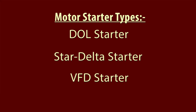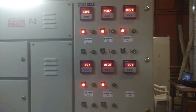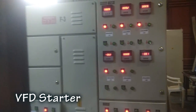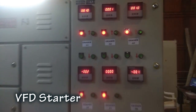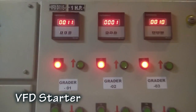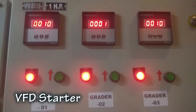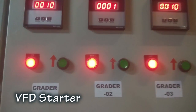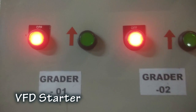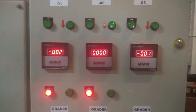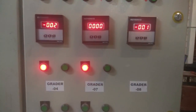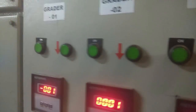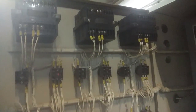Coming back to the motor starter panel, here we can see VFD starters. VFD starters are used in grader machines in a rice mill. In the front we have on and off push buttons along with speed increase and speed decrease push buttons. We also have a frequency display of the VFD for each VFD starter. After opening the door we can see the frequency meter and push buttons mounted in the front door.